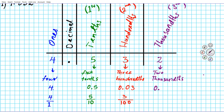We need to occupy the third decimal place, so the first two places are going to be placeholders: zero for the tenths place, zero for the hundredths place, then we put in the 2 in the third decimal place — giving us 0.002. As a fraction, two thousandths is 2 divided by 1000.